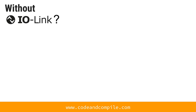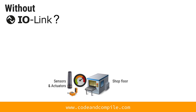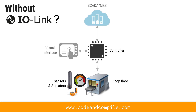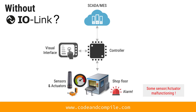Let's take an example of what happens without IO-Link in an industry. Suppose you are on a shop floor with sensors and actuators, and the shop floor is controlled by controllers linked via Profinet or fieldbus communication. This controller is further linked with a visual interface and SCADA MES for monitoring and controlling at a higher level. Now imagine a situation where a sensor or actuator is malfunctioning and you have an alarm.